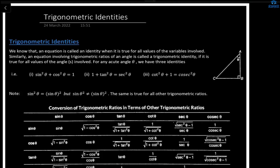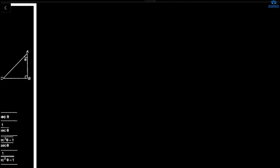The first identity is sin²θ + cos²θ = 1. The second identity is 1 + tan²θ = sec²θ. The third is cot²θ + 1 = cosec²θ. In fact, the second and third identities can be derived from the first. Dividing the first identity by cos²θ gives sin²θ/cos²θ + 1 = 1/cos²θ, which is tan²θ + 1 = sec²θ. Dividing the first identity by sin²θ gives 1 + cot²θ = cosec²θ.